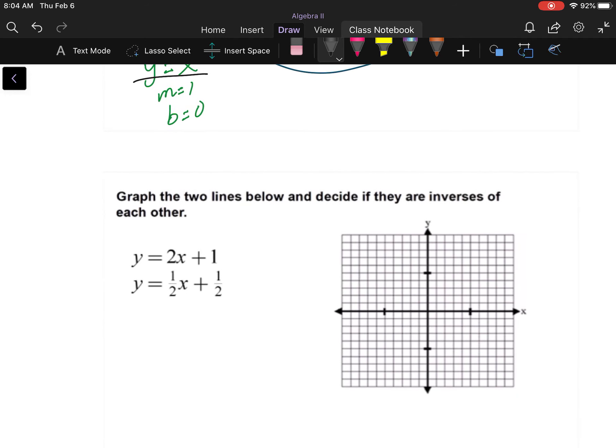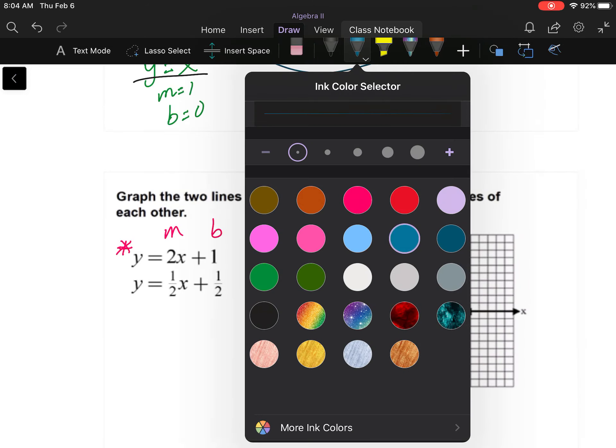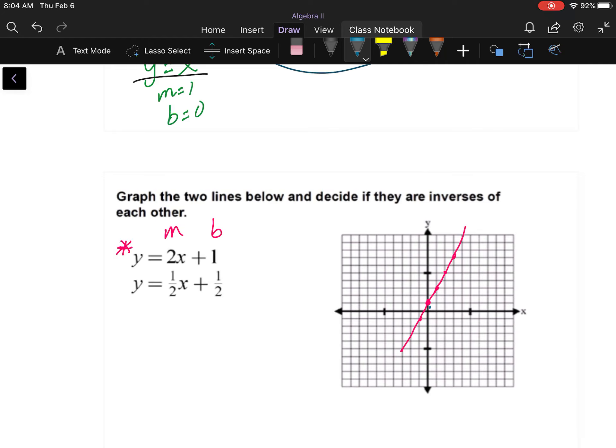So I'll graph the line. There's my slope, there's my y-intercept. I'm going to go to y-intercept over there, up two over one, up two over one, up two over one, down two over one. There's my first line there in pink. And my next line, I'm going to start at about one half and go up one over two, up one over two, up one over two.